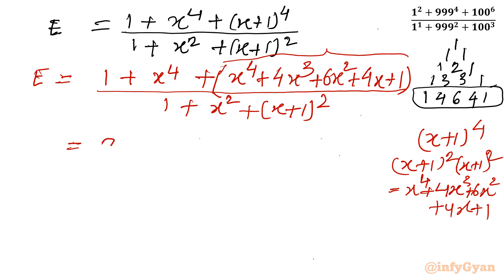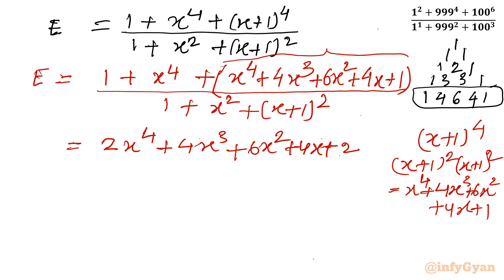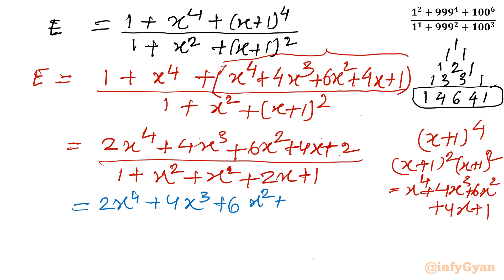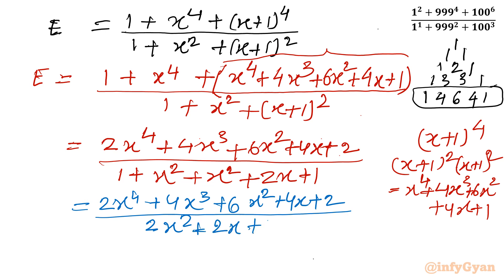Simplifying the numerator gives 2x^4 + 4x^3 + 6x^2 + 4x + 2. For the denominator, expanding (x+1)^2 gives x^2 + 2x + 1, so the denominator becomes 2x^2 + 2x + 2. Numerator and denominator are both divisible by 2.